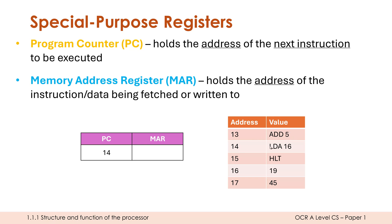Let's say ADD 5 is finished and we move on to the next instruction, LDA 16. The PC will always be pointing to the next one, so that would be address 15. What would be happening to the MAR? Well, the MAR initially will mirror the PC — the value in the PC will be copied into the MAR, which we'll talk more about in the fetch stage in a future video. LDA 16 tells us to load in the value held at location 16 into our CPU, which is the value 19. So the MAR would hold 16, because it's not holding the actual value 19 — it's holding the address of that data, which is 16.